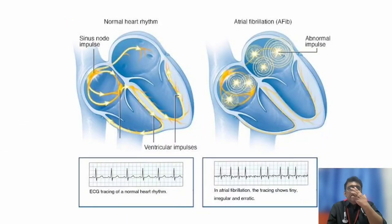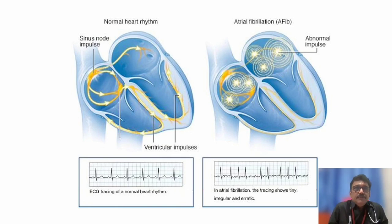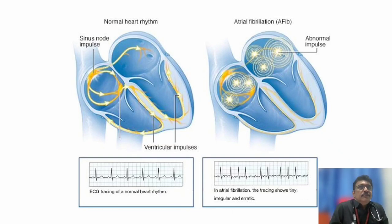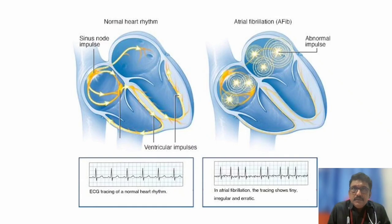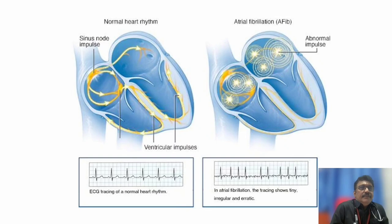Normally the atria produce one P wave, giving one QRS complex with a PR interval — that is sinus rhythm. In atrial fibrillation, the QRS complexes are totally irregularly irregular on the ECG, the baseline is wavy, P waves are not traceable, and the QRS complexes come in a completely irregular pattern.